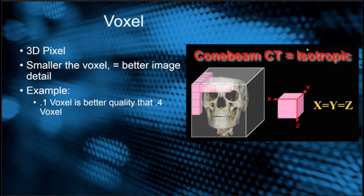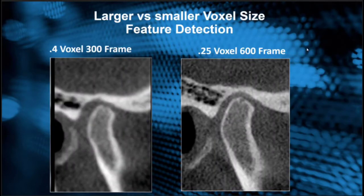For example, a 0.1 voxel is better detail and better image quality than a 0.4 voxel. In cone beam CT, voxels are isotropic, which means they have the same height, depth, and width, and therefore being a cubical voxel. When we rotate the volume, the image quality stays the same.